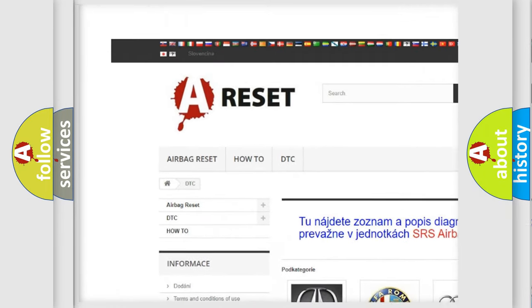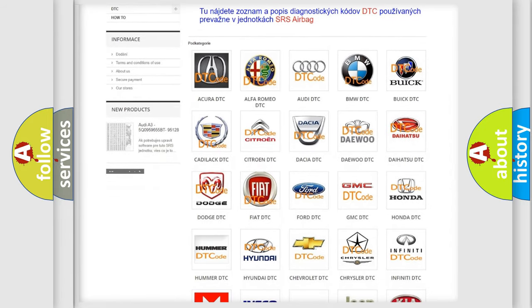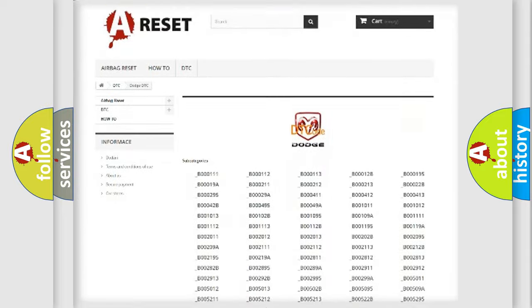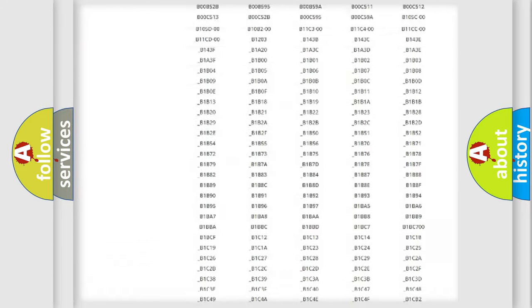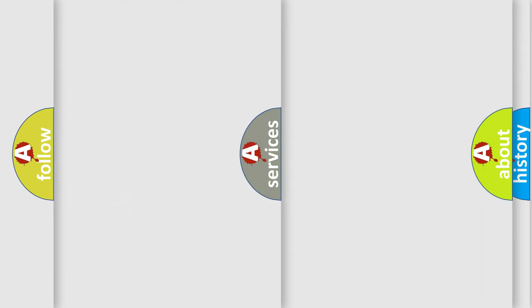Our website airbagreset.sk produces useful videos for you. You do not have to go through the OBD2 protocol anymore to know how to troubleshoot any car breakdown. You will find all the diagnostic codes that can be diagnosed in Dodge vehicles, and also many other useful things.